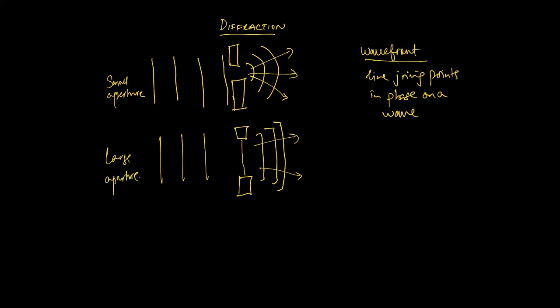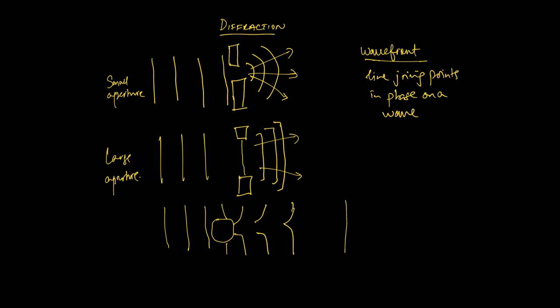What about if there's an actual obstacle in the way? Let's say you have a circular object as the wavefront is approaching. What we find is the wave actually just spreads around it. The wavefront might look a little bit like this, and then eventually some distance out, it might look exactly like what it was before.